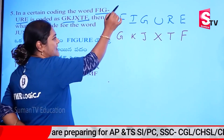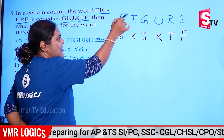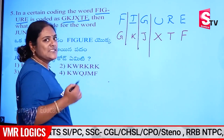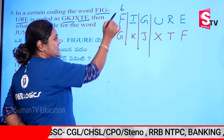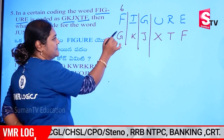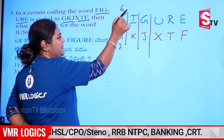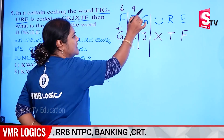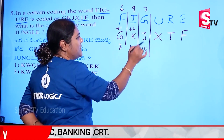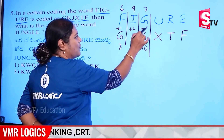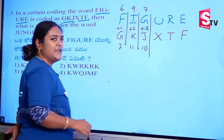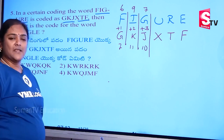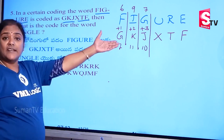Now, if we have opposites, we will go to the place values. 6 and 7 — plus 1; 9 and 11 — plus 2; 7 and 10 — plus 3. Wow! Now I have to say the logic.